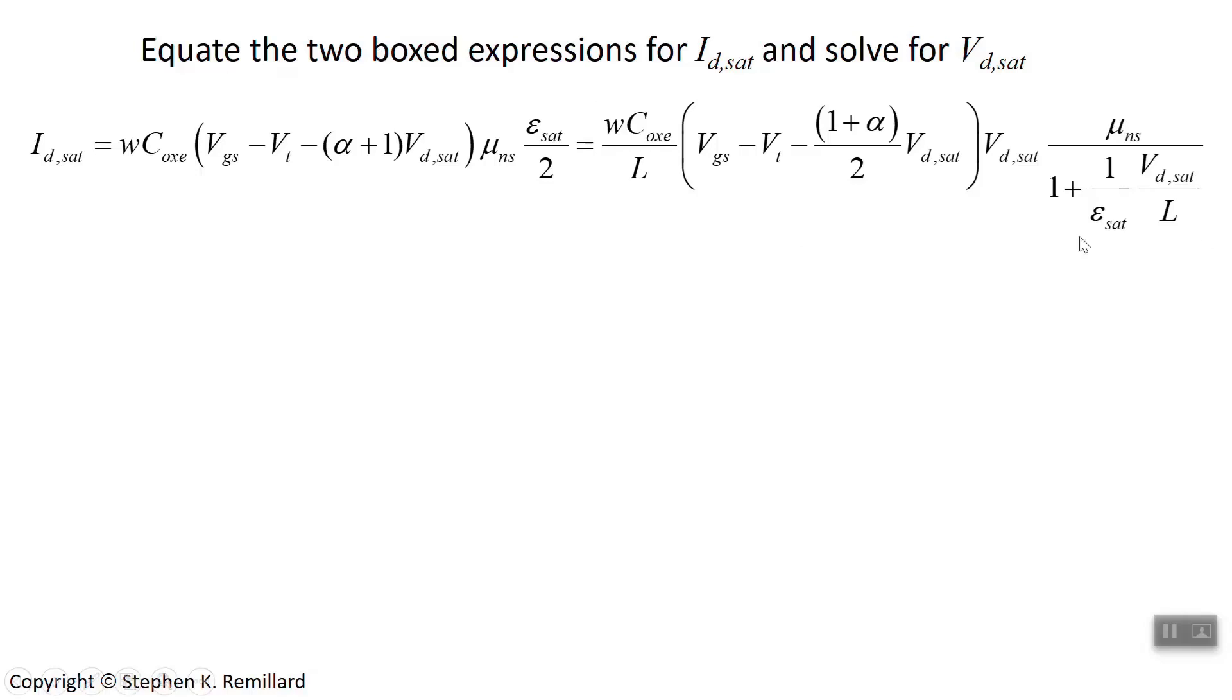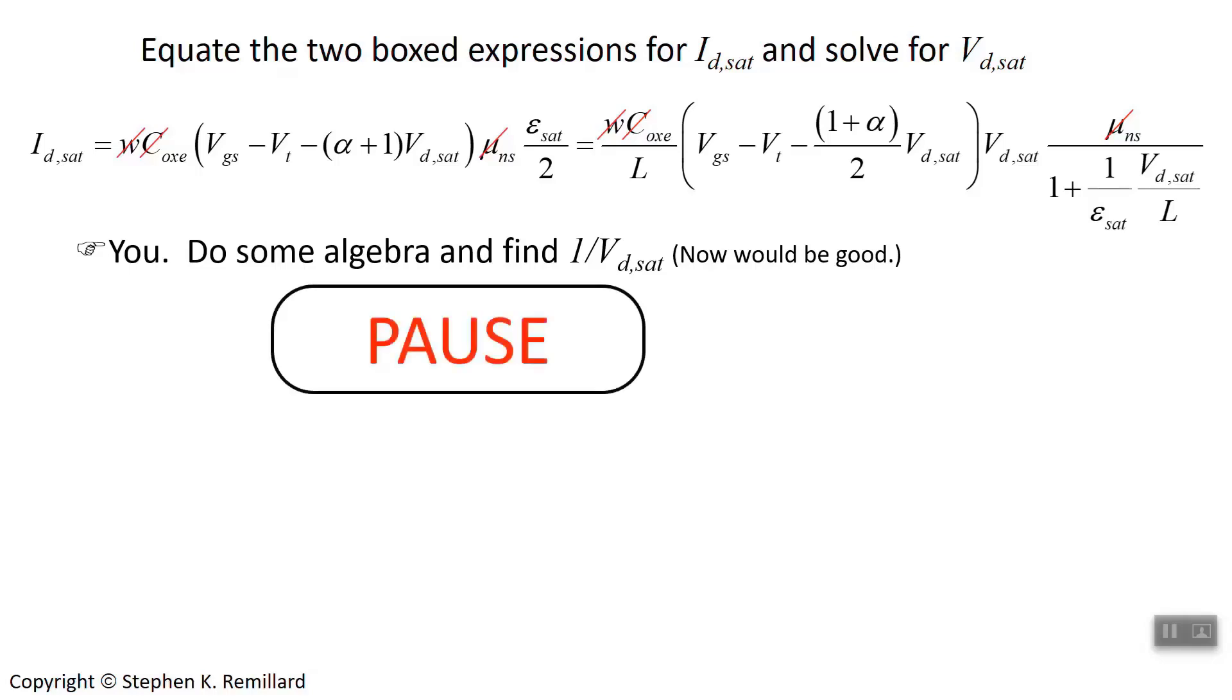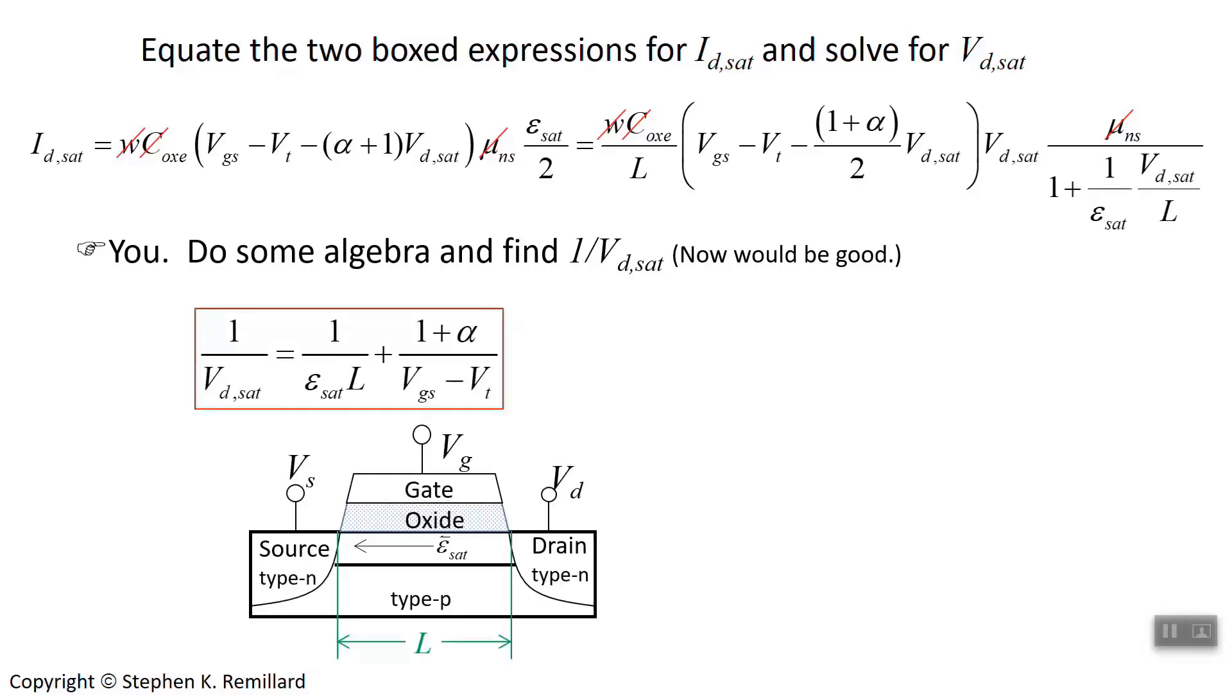So now we have an equation that has only V_Dsat. Do some algebra, solve it for V_Dsat. Actually, not for V_Dsat, but solve it for one over V_Dsat. The algebra is a lot easier. So you have solved for it and you found that expression, and that's the drain-source voltage when the I-V curve is saturated, accounting for velocity saturation. What in this expression accounts for velocity saturation? It would be this first term here: one over E_sat, that's the electric field when velocity saturates, times the channel length. Otherwise, if you don't have this first term here, V_Dsat is exactly what we arrived at in the last lecture for the drain-source voltage at saturation.